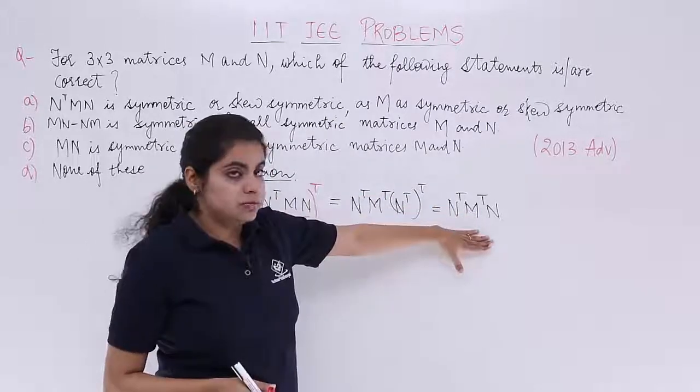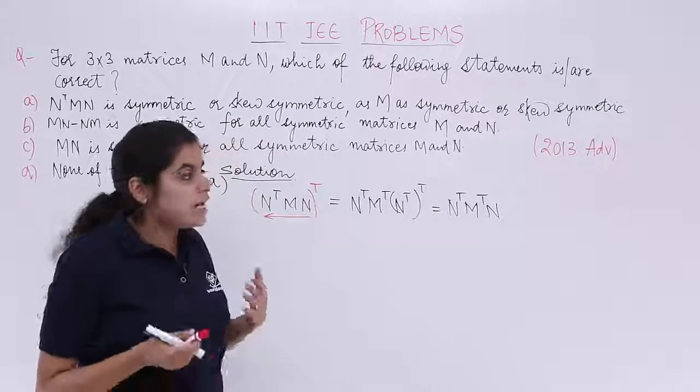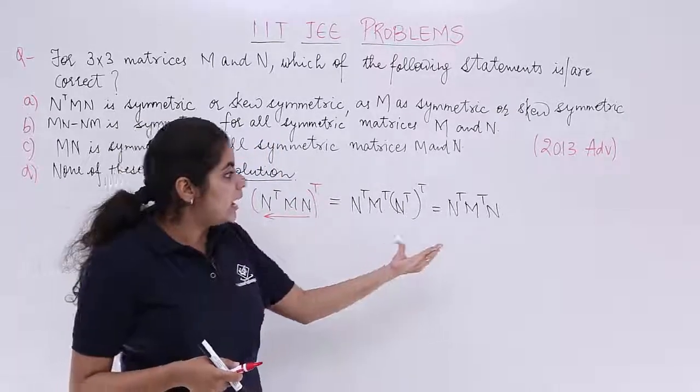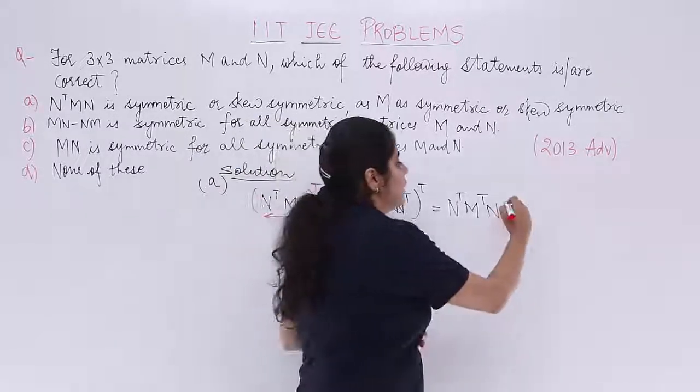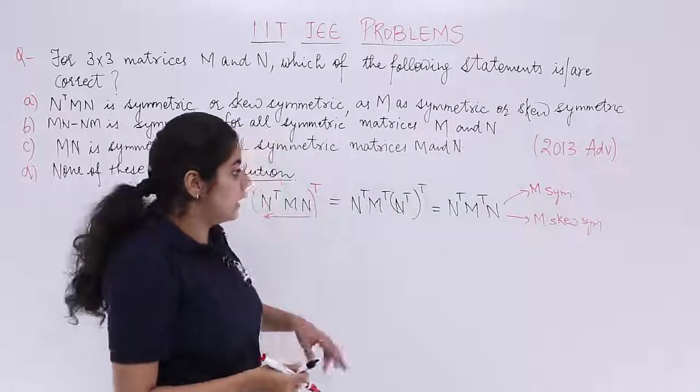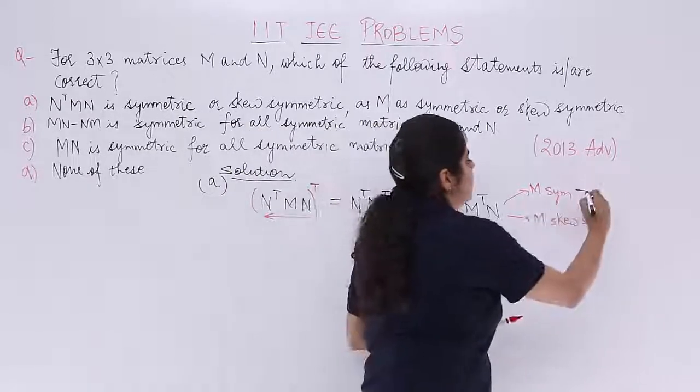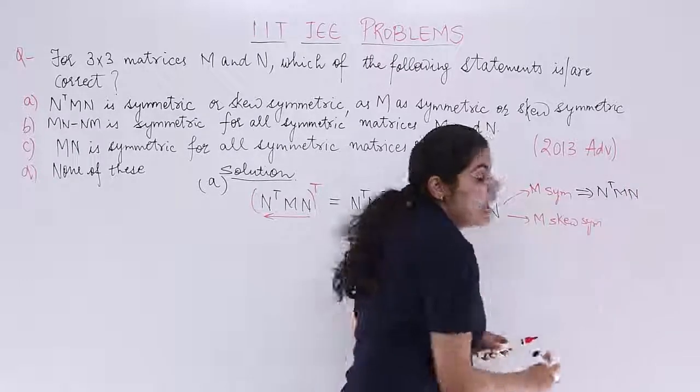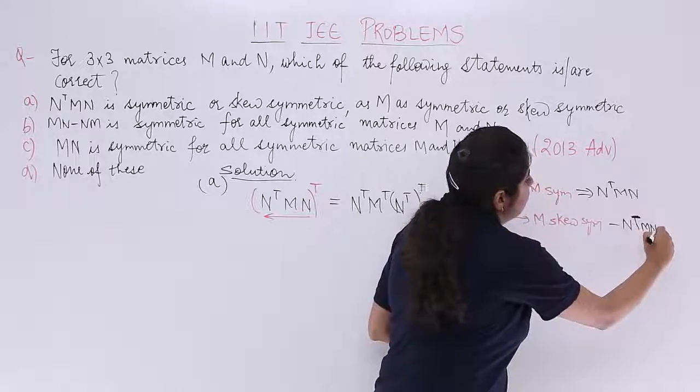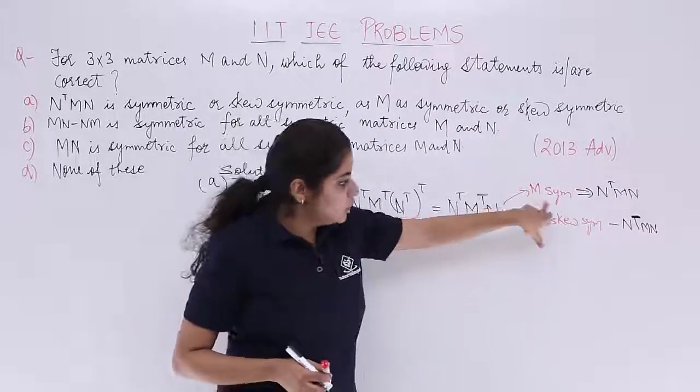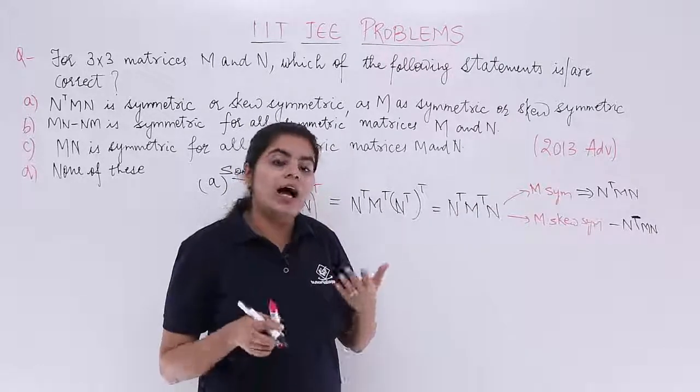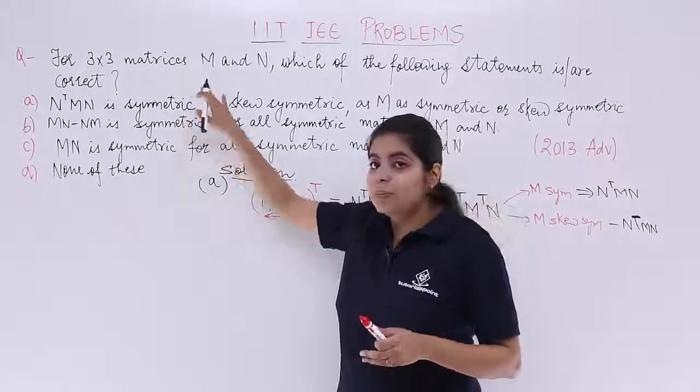What about the result? Is it symmetric or is it skew symmetric? The result actually is symmetric or skew symmetric. It depends upon the nature of M. Because I had been given N transpose MN, I have again N transpose M transpose N. Either M if symmetric or M can be skew symmetric. If M is symmetric, it is only M because M transpose is equal to M. So my result will be N transpose MN. And if it is skew symmetric, it will be minus N transpose MN. That means if I have the nature of M fixed, then only I have the nature of final expression fixed. So depending upon the nature of M, I have the final result. Yes, option A is definitely correct.